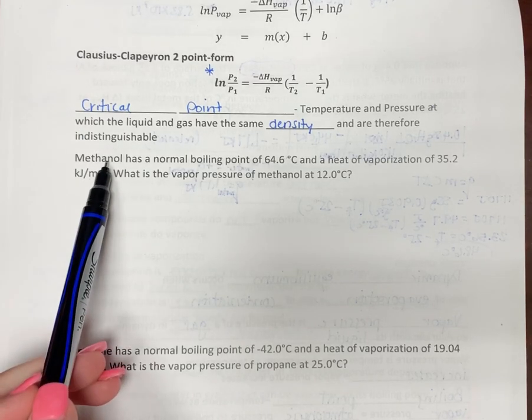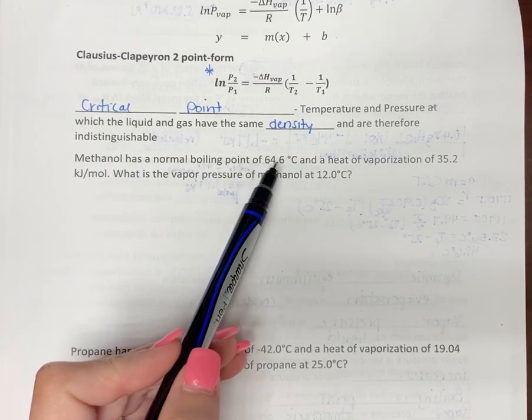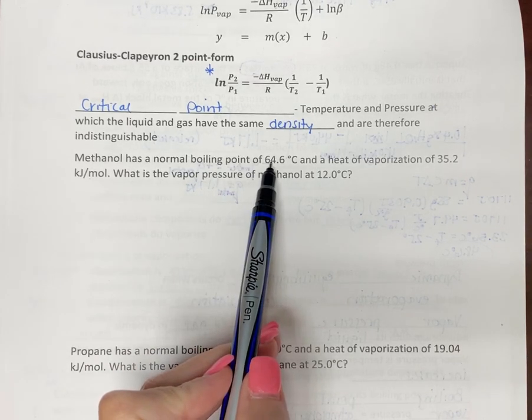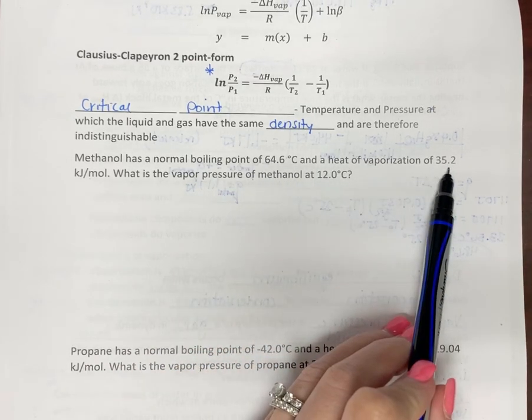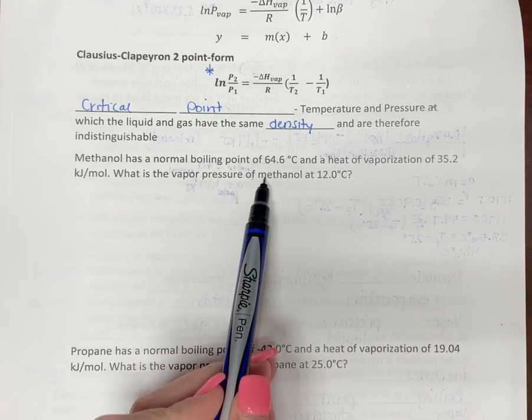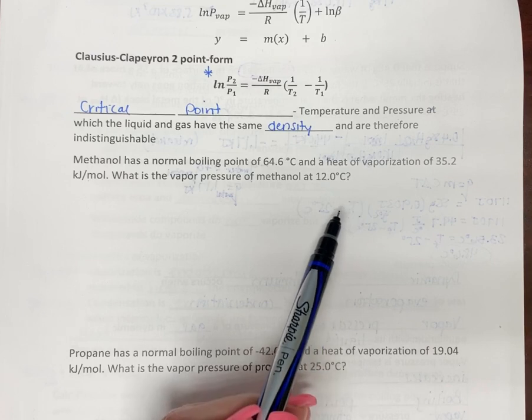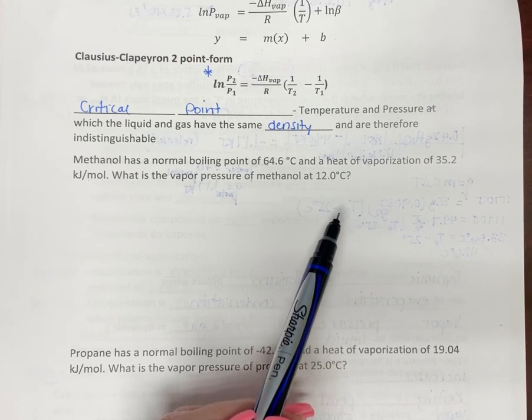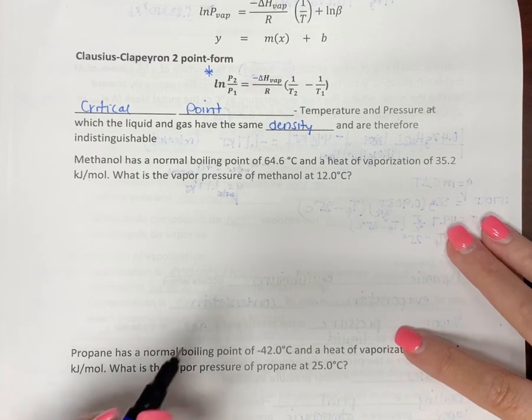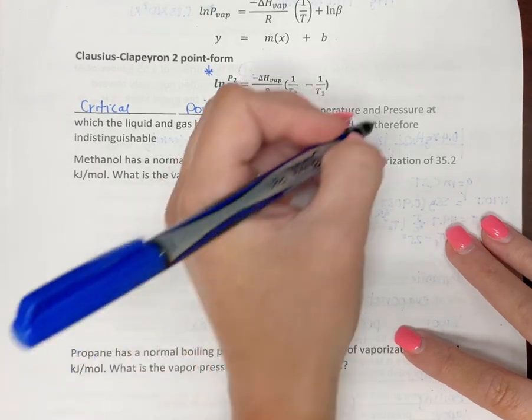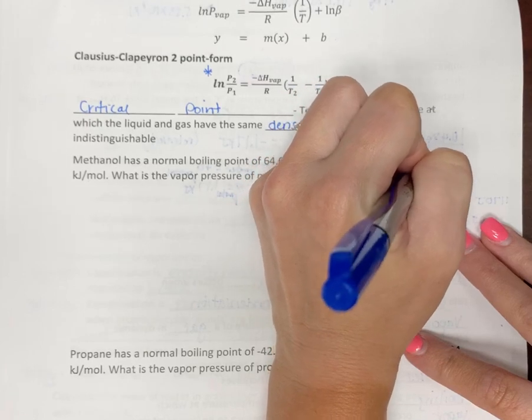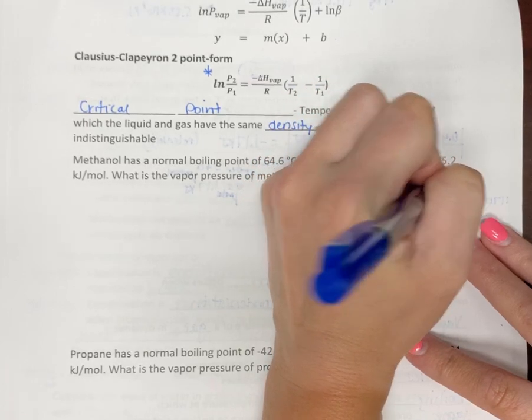So, methanol has a normal boiling point of 64.6 degrees Celsius and its normal heat of vaporization, 35.2 kilojoules per mole. What is the vapor pressure of methanol at 12 degrees Celsius? Now, remember, before we start, we got a little bit of work to do here.